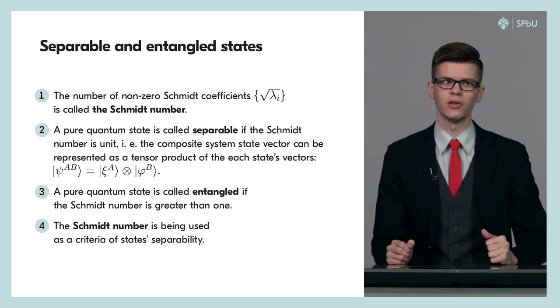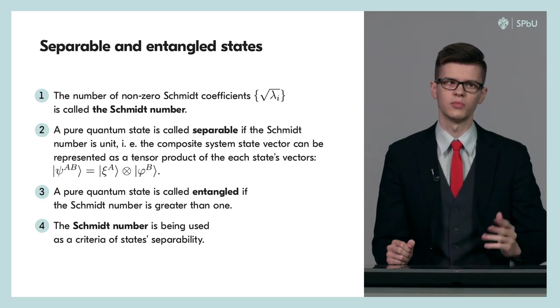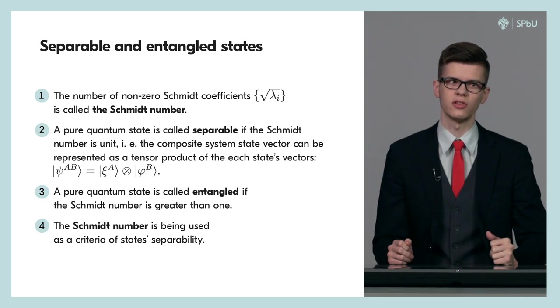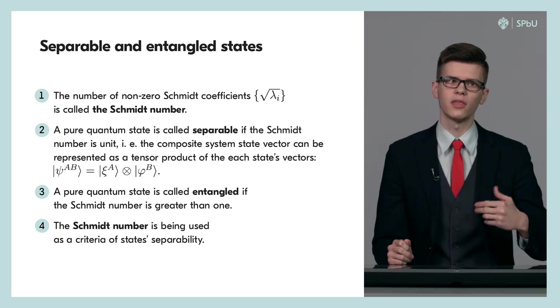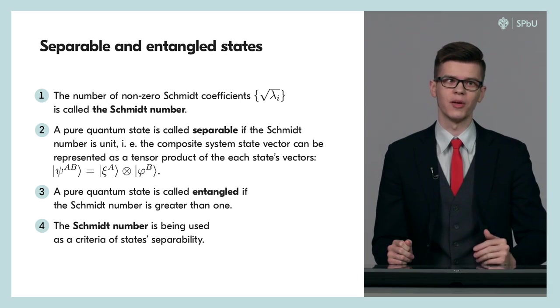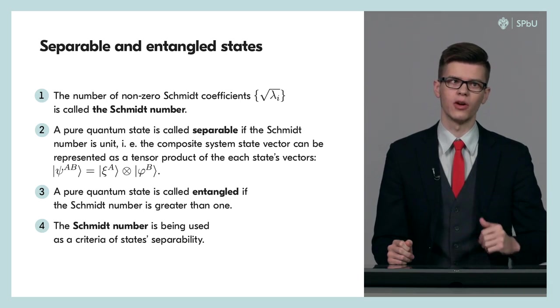Separable states are simpler since they have only two multipliers. These multipliers are two state vectors corresponding to certain subsystems and nothing more. However, in practice, the case of entangled states is of interest.